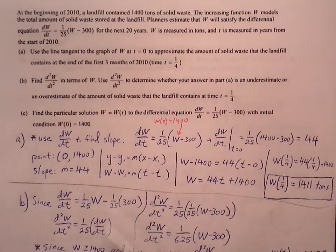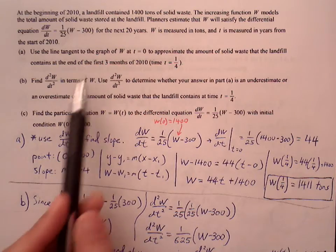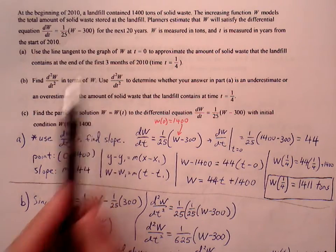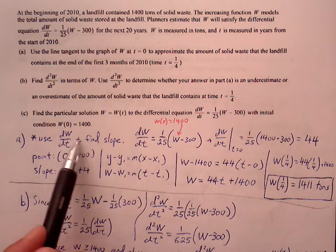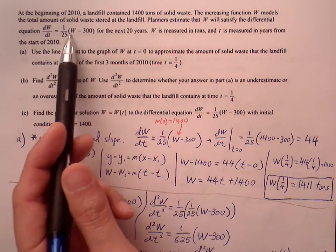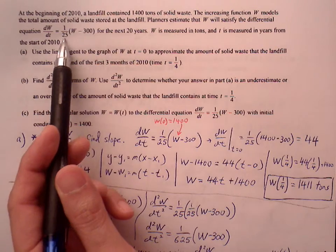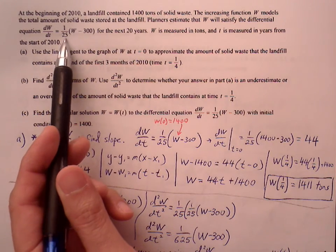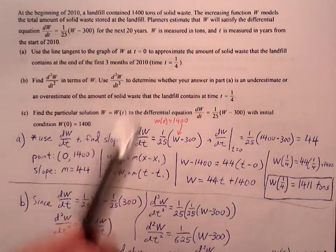For part A, if we want to find the tangent line, we have to first find the slope. To find the slope, we need to find the derivative equation. But we have the derivative equation, right? We have dW/dt, so we can use this to find the rate of change or the slope that we need at t equals one fourth.